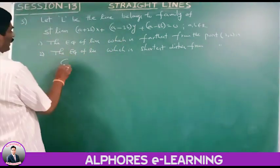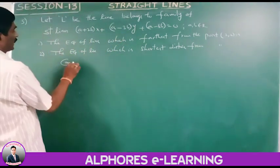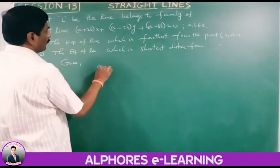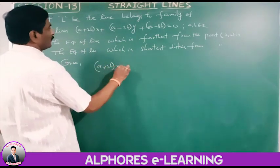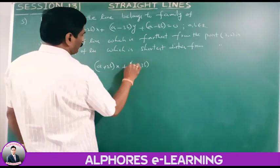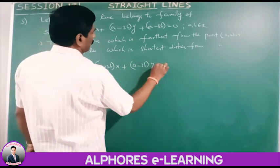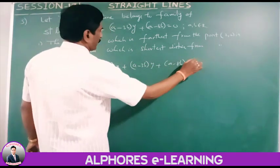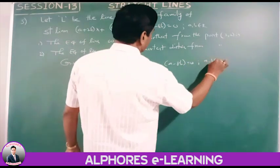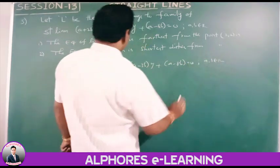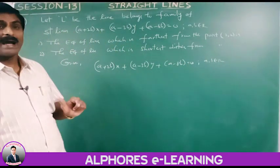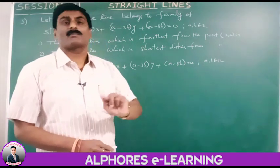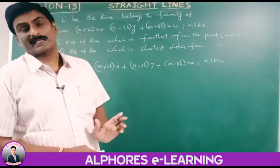The given family of lines is (a+2b)x plus (a minus 3b)y plus (a minus 8b) equals 0, where a, b are real numbers. We reduce this into lambda-1·l1 plus lambda-2·l2 equals 0 and find the point of concurrency of the family.